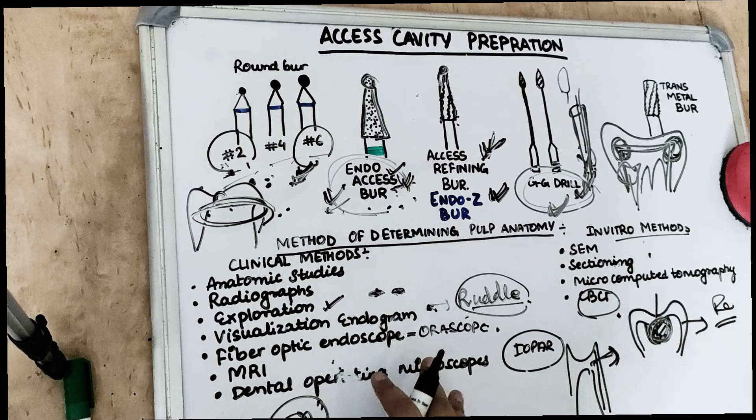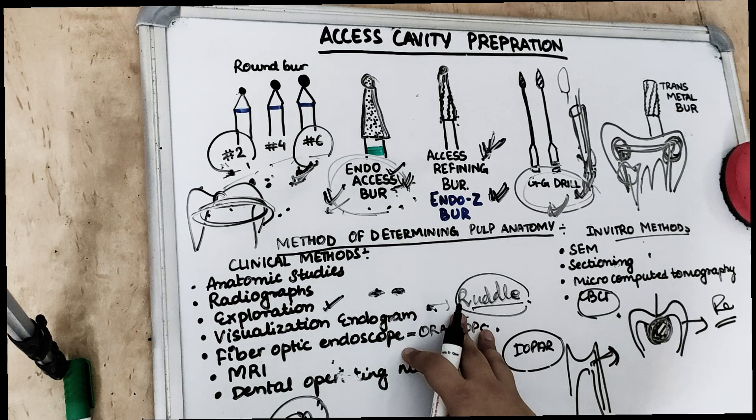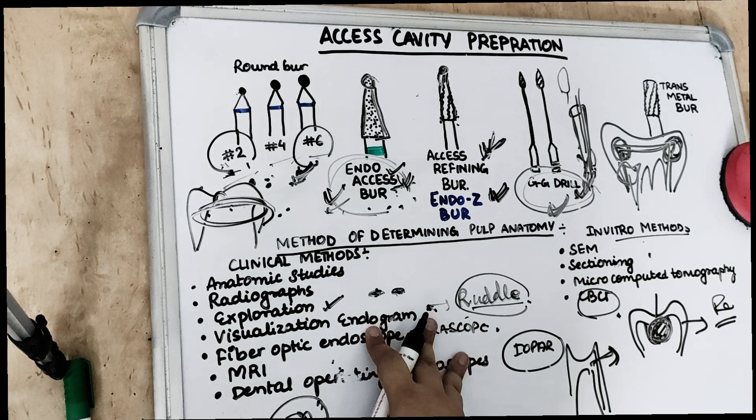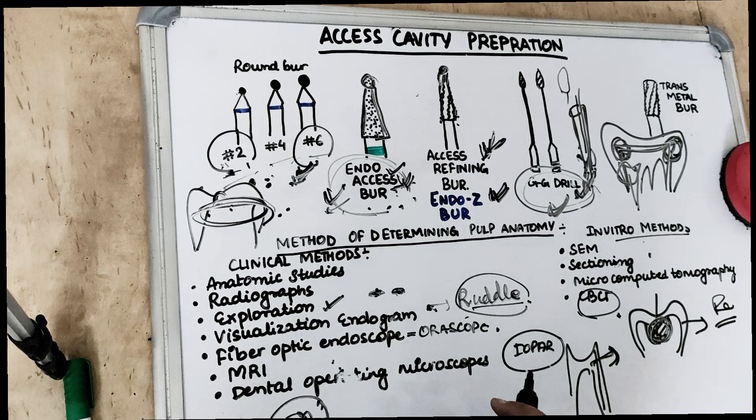To summarize, when accessing the cavity we must first know the anatomy of the root and root canal. In the upcoming videos we will study the root and canal anatomy of anteriors, premolars, and molars. If you have any questions, leave them in the comments below, give a thumbs up if you liked the video, and subscribe to our channel.